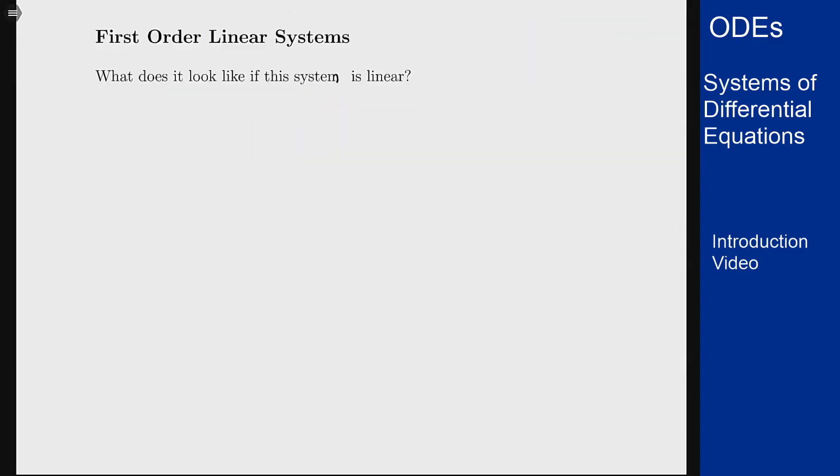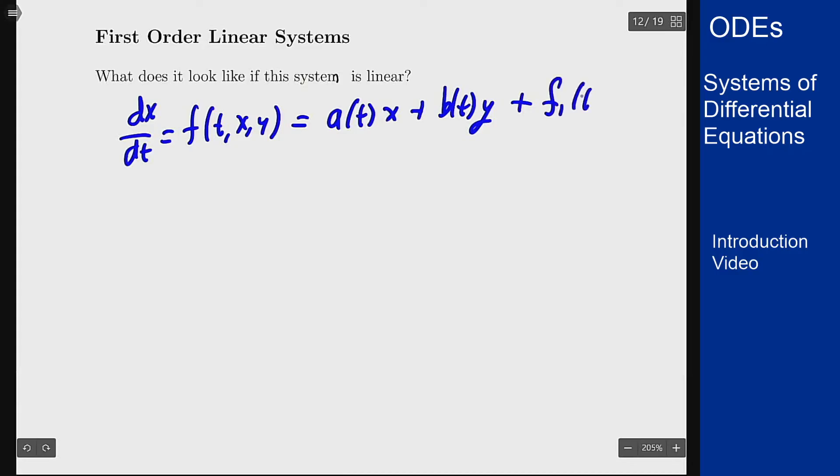Let's look back at the two variable case. I had my dx dt equals some function f of t, x, and y. Now if this is linear, it means the x and y only appear on their own to the first power, they're not multiplied by each other, there are no weird functions. So I can rewrite this as some function a of t times x plus a function b of t times y, and then plus what I'm going to call f1 of t over here. If it's linear, it's of that form.